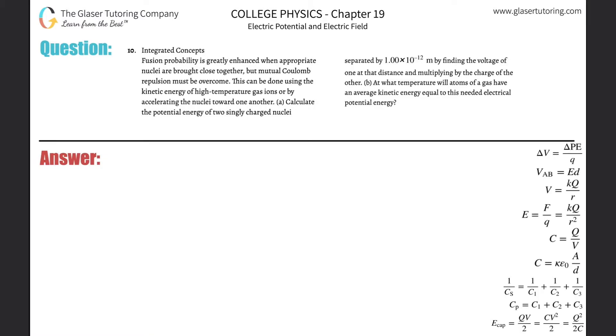Number 10, integrated concepts. Fusion probability is greatly enhanced when appropriate nuclei are brought close together, but mutual Coulomb repulsion occurs. Letter A: Calculate the potential energy of two singly charged nuclei separated by 1×10⁻¹² meters by finding the voltage of one at that distance and multiplying by the charge of the other. So you've got two singly charged nuclei, both positively charged.